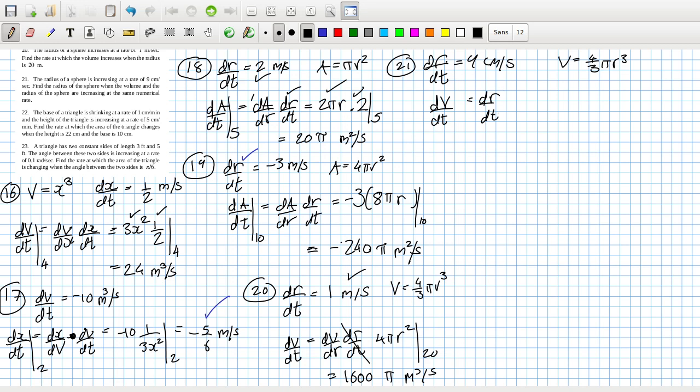So the sphere is 4 over 3 pi r cubed, and we want to find the radius when the volume and the radius increase at the same rate. So when dv dt equals dr dt. Well, I'm assuming that this dr dt is a constant 9, so basically it's asking when will dv dt be 9.